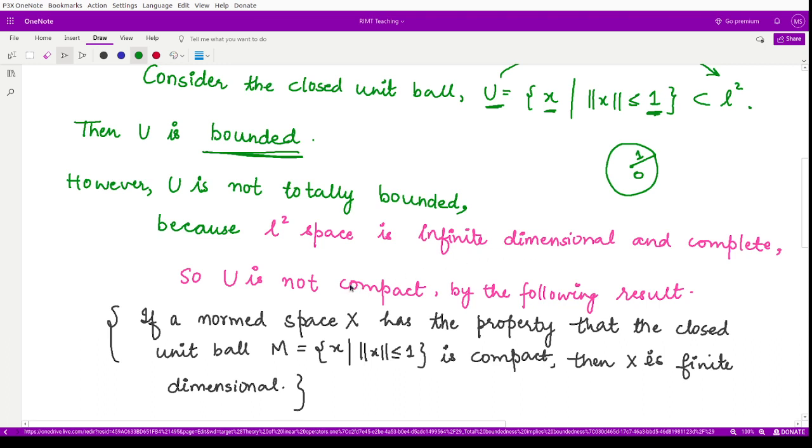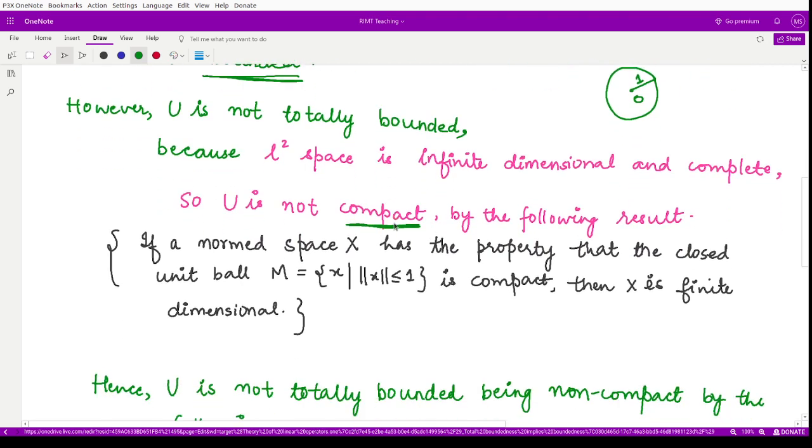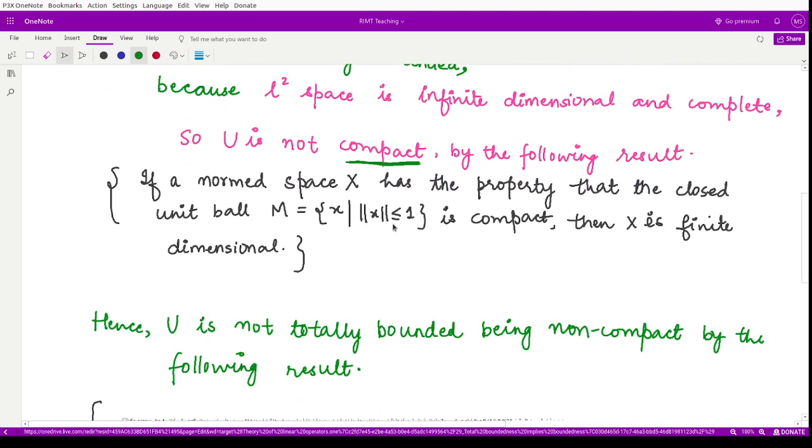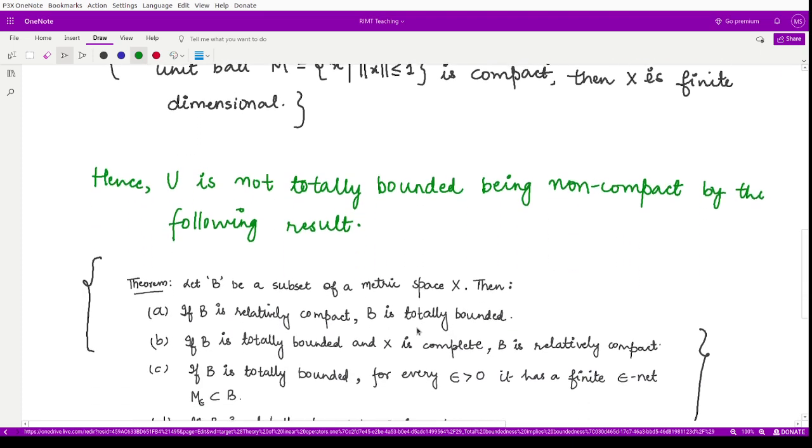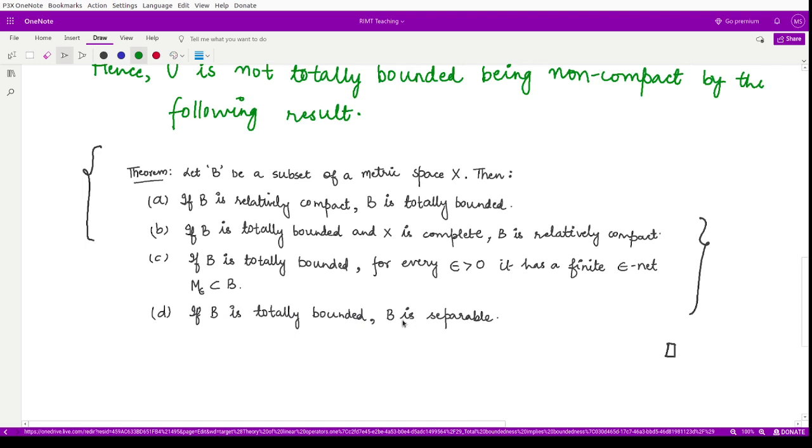Since L2 is complete, the set U cannot be compact. If it cannot be compact, therefore it is not totally bounded, because compactness implies total boundedness. So we can say U is not totally bounded because it is not compact, using this theorem.